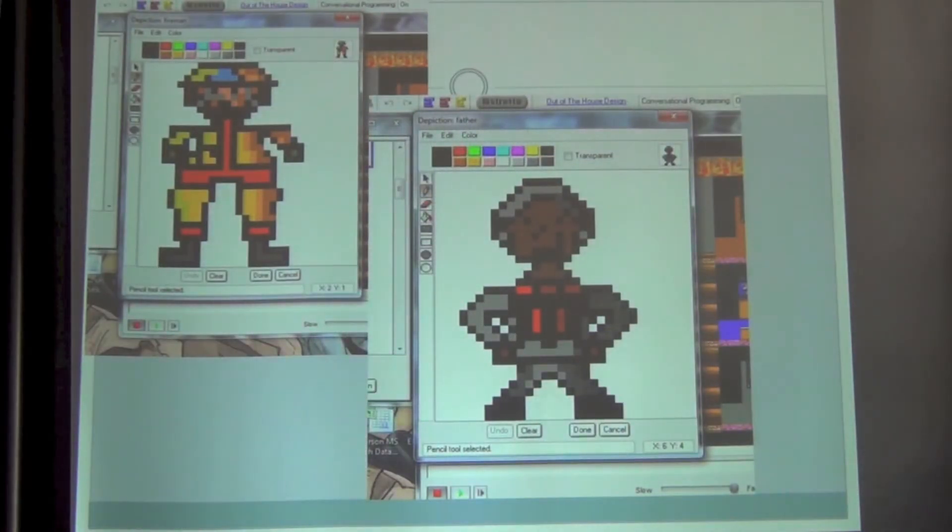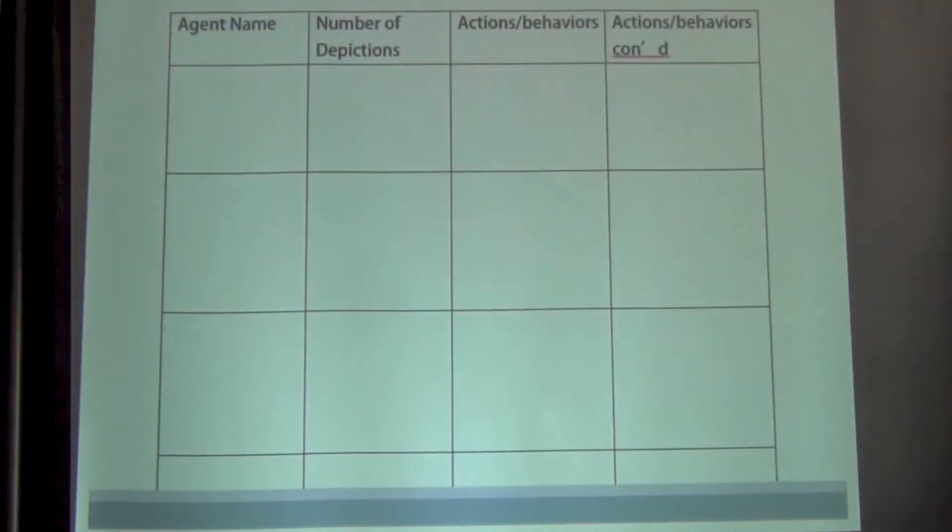So here are those same agents now in the actual program itself. And of course they do multiple depictions and stuff like that. What they do next is I have them do a plan sheet for each agent. The number of depictions they're intending to have as well as whatever actions and behaviors they need to have. I really like this because it helps them organize interactions between different agents. If one is going to have a collision with another agent, then this allows them to kind of see conceptually the link between the two.